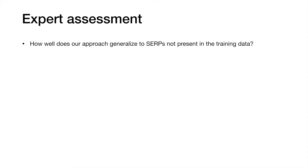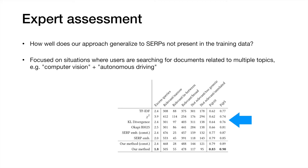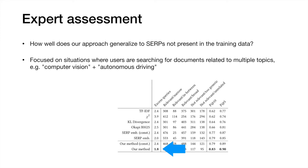In our evaluation, we performed both an expert assessment of the quality of query suggestions and a user study. For the expert assessment, we were interested in how our query suggestions generalised to SERPs not present in our training data. We focused on situations where users searched for documents with multiple topics, such as computer vision and autonomous driving — both individual queries were in our training data, but not the combined query. The pseudo-relevance feedback method performed comparatively poorly in overall precision, while the SERP embedding model identified more relevant query suggestions. Our blended method performed best overall, including on a fairness measure ensuring suggestions related to both topics were represented.